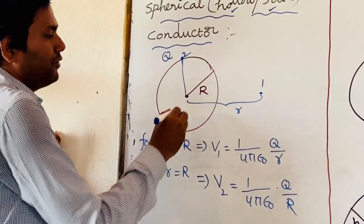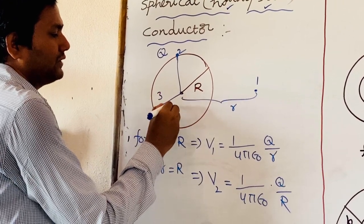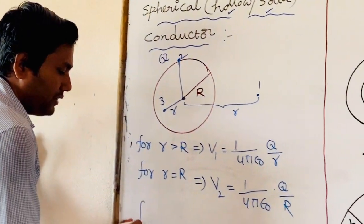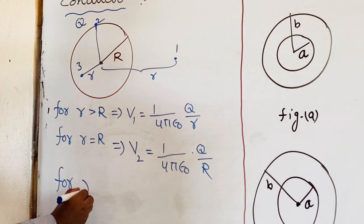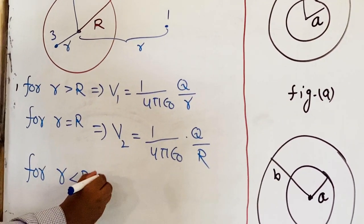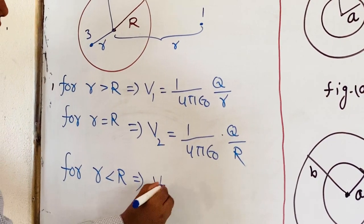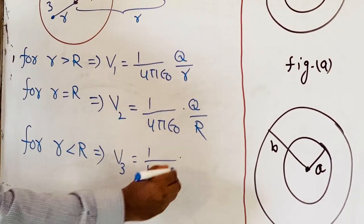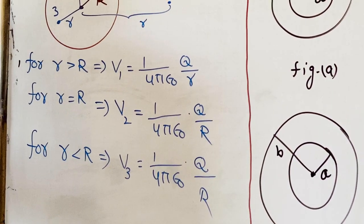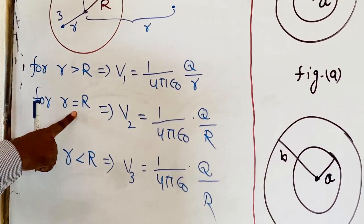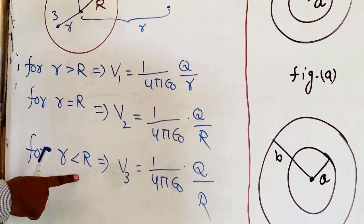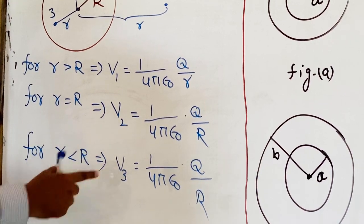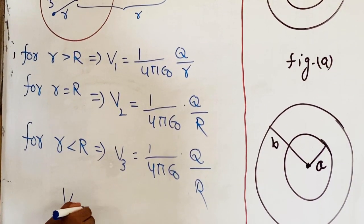Similarly, if you are taking any point like point 3 at distance r, where r is less than R — for points that are inside, r less than R — the value of the potential at that point is (1/4πε₀) × (Q/R). So here we clearly observe that for points lying on the surface as well as for points inside the surface, both potentials are equal: V2 is equal to V3.